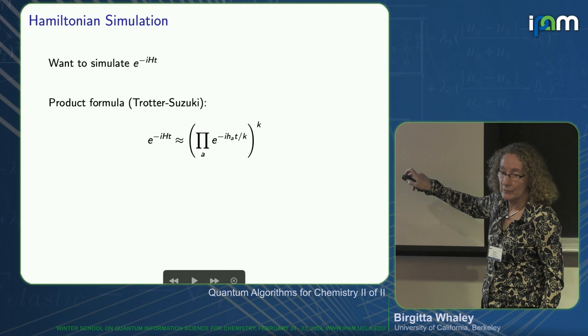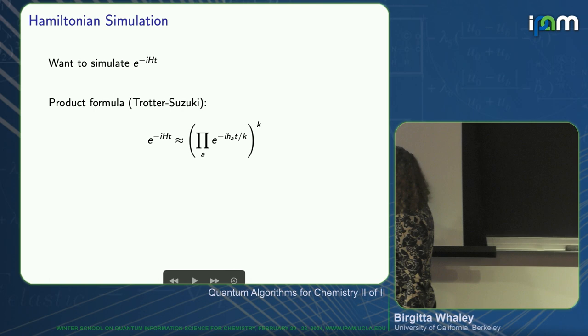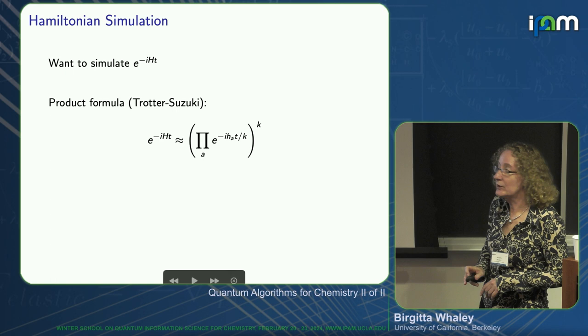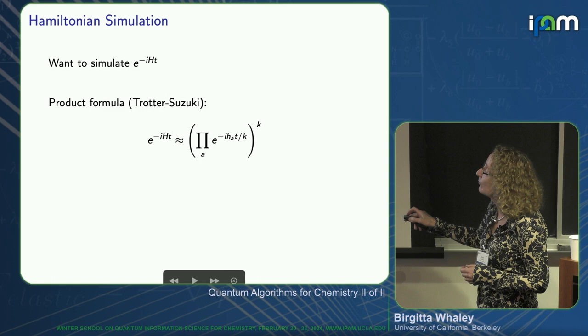Each one of those parentheses is regarded as a single Trotter step. Treating these as a product is an approximation because if the terms H_A and H_A prime do not commute with each other, you get correction terms that also have to be applied. The idea is to make this time step as small as possible so those non-commutation terms are as small as possible, which is why we need multiple steps k.